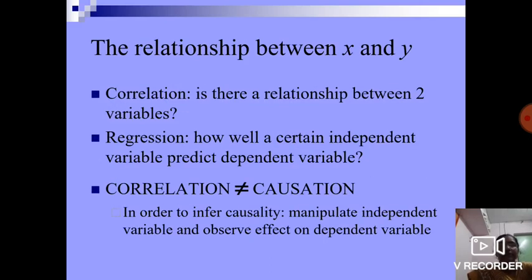The relationship between X and Y is correlation. Is there a relationship between two variables? Regression answers how will a certain independent variable predict dependent variable. Correlation always not equal to causation. In order to infer causality, manipulate independent variable and observe effect on dependent variable.